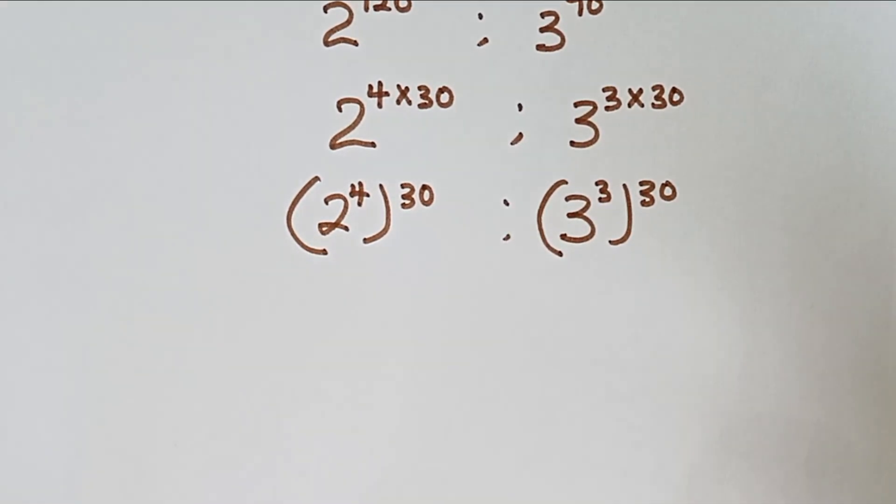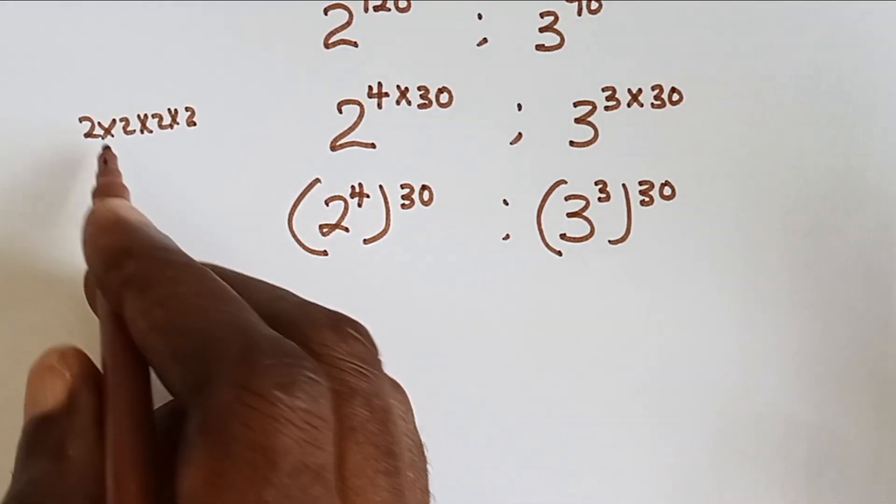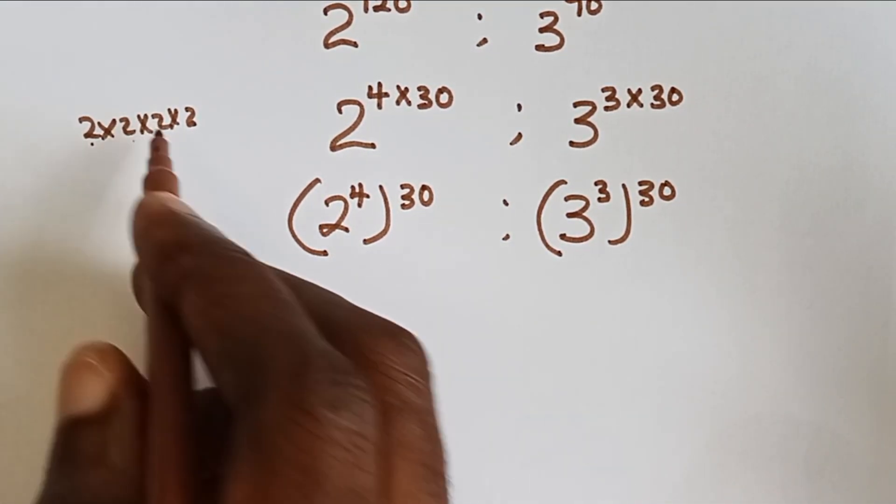So we know what 2 raised power 4 is. It simply means 2 times 2 times 2 times 2 and that is 2 times 2 is 4, 4 times 2 is 8 times 2 is 16.